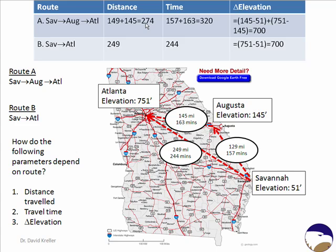As we look at these various parameters, you just need to ask: does the change in the parameter depend upon the route taken, or does it only depend on the final state? Distance: if you did this trip in two legs, the distance would be a little bit greater. So distance does depend on path — it is not a state function. Time: if the route is broken into two parts, 157 plus 163 minutes gives 320 minutes total, but the direct path takes only 244 minutes. So time also depends on the path — it is not a state function.